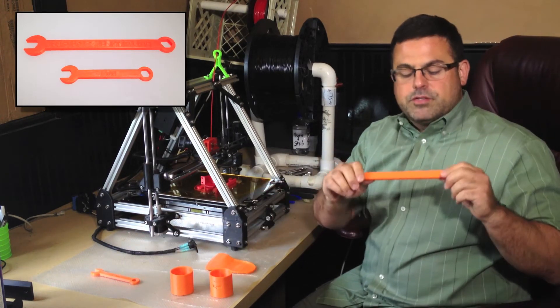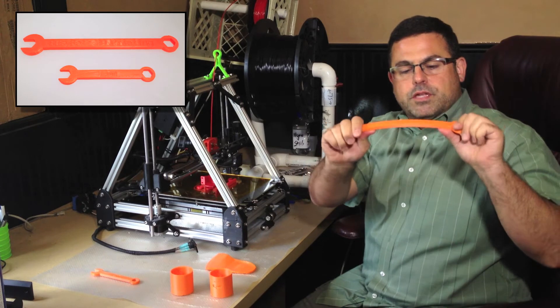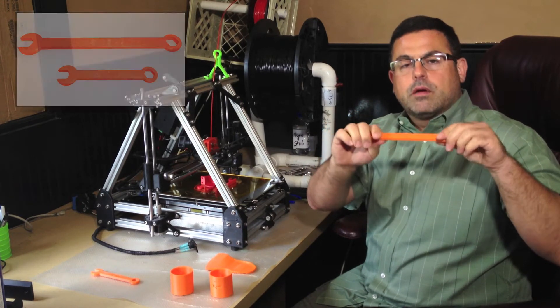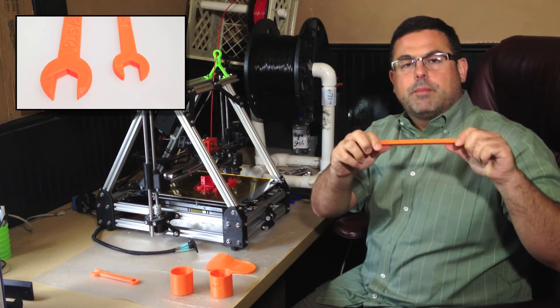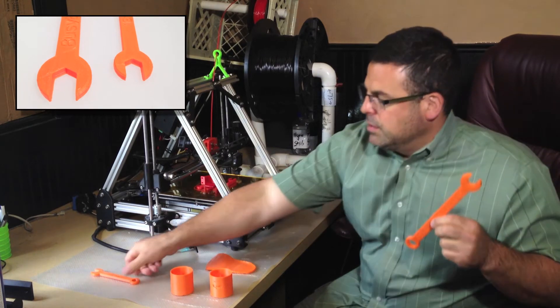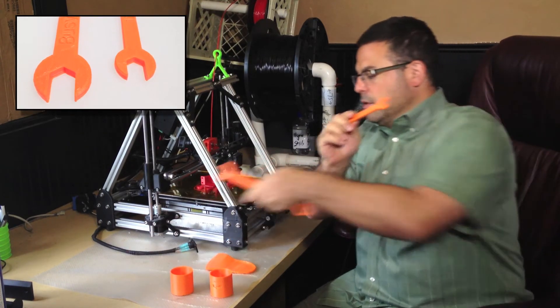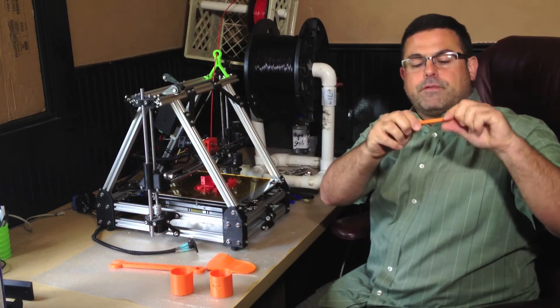Likewise, if you're printing something where you want strength, you can see there's still bend to it. But this is stronger because I ran six top and six bottom on this wrench. On the smaller wrench it's actually pretty rigid.